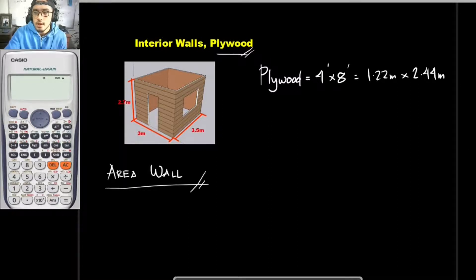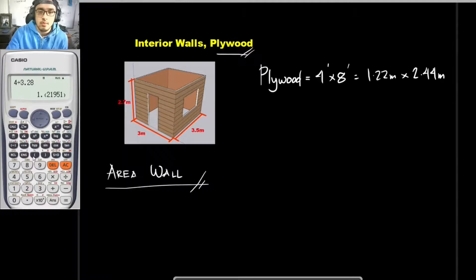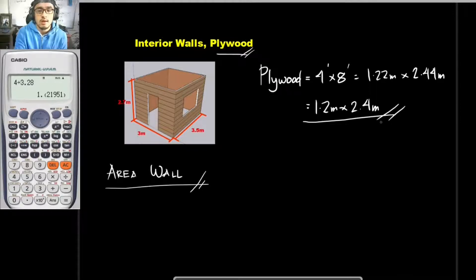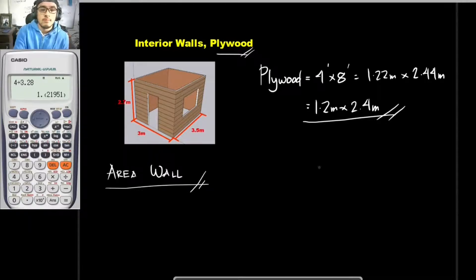Let's confirm: 4 divided by 3.28 gives 1.22, and the other dimension is 2.44. But here in woodwork's estimation, it is better for us to use the dimensions 1.2 meters by 2.4 meters. So let's use this instead. So meaning, for every plywood, it has dimensions of 1.2 by 2.4.